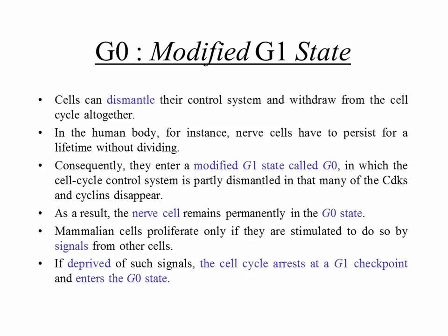Mammalian cells proliferate only if they are stimulated to do so by signals from other cells. If deprived of such signals, the cell cycle rests at a G1 checkpoint and the cell enters the G0 phase — it's not going to divide anymore.